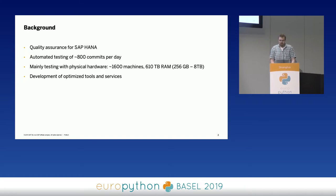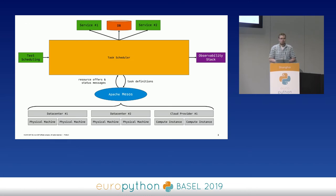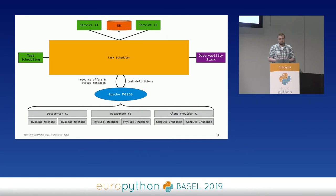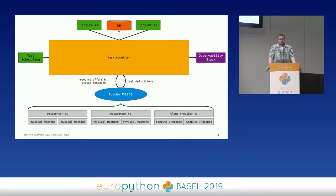One of these tools is our own task execution framework, which we put on top of Apache Mesos. Apache Mesos is similar to Kubernetes, but a bit more low level. It provides an interface to resources of machines. We have multiple data centers with our own physical hardware, but also various cloud providers. Every time an instance has resources available, they send them over Apache Mesos to our own task scheduler, which then decides what kind of task to schedule on those available resources.